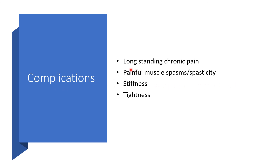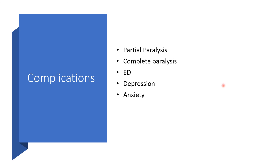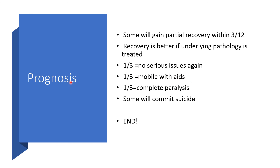Long-term complications include chronic pain, painful muscle spasm or spasticity, stiffness, and tiredness. More severe complications include partial or complete paralysis and urinary dysfunction. Anyone with this condition may likely experience depression or anxiety. Regarding prognosis, some will gain partial recovery within three months — recovery is better if the underlying pathology is treated. One-third will have no serious issues; one-third will need aids to move around; one-third will have complete paralysis, and some may commit suicide.